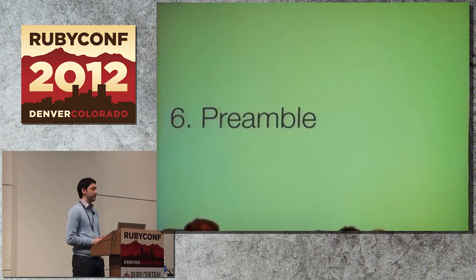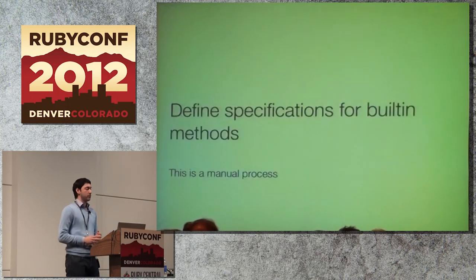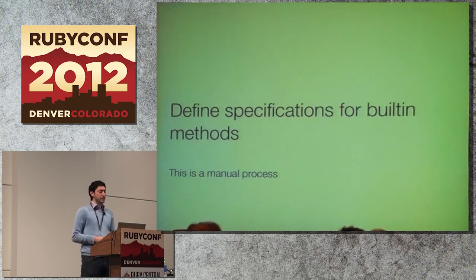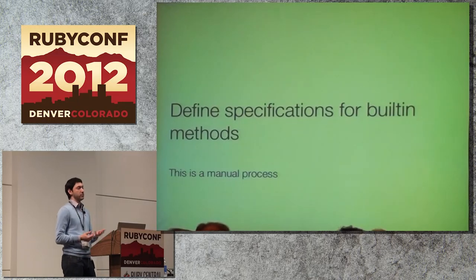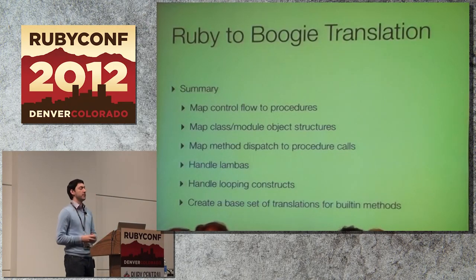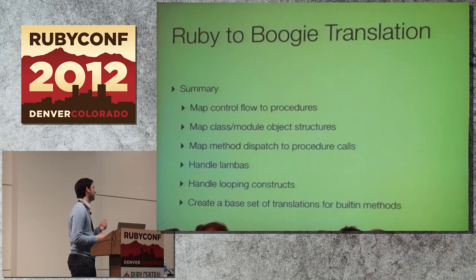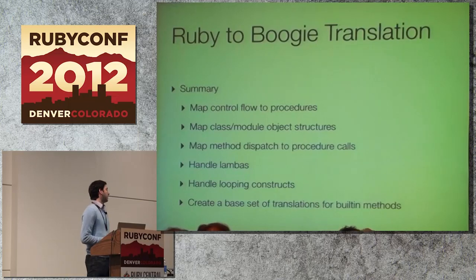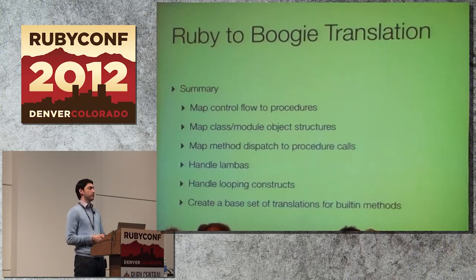The last step is what I call preamble — where we define specifications for built-in methods. By default Ruby doesn't have specifications built in for things like fixnum plus and other operators, so we have to manually define those. There's good precedent using Ruby spec and tests, but it's still a manual process. To summarize: we map control flow, the object type system, method dispatch to procedure calls via static analysis, lambdas to anonymous methods, loops with invariants, and create the preamble as a base set of specifications for built-ins.